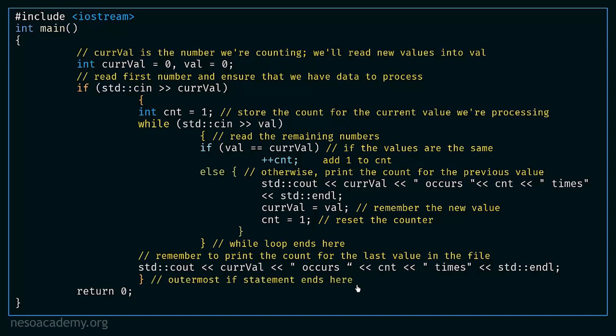The outermost if statement ends here, completing the program. In a nutshell: we first check if the user has entered something and store the first value. Then we run the while loop comparing the current value with the previous value — if the same, we update the counter; when they differ, we print how many times the previous value was entered. That is the full concept of this program. Let's go to Visual Studio Code to run it.